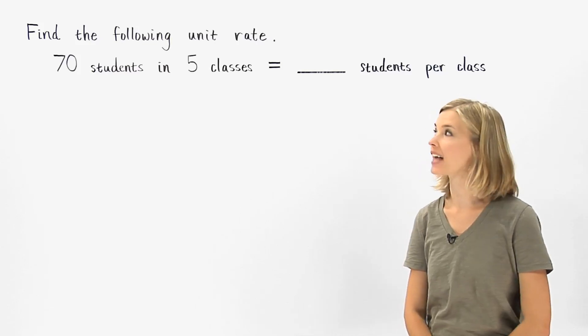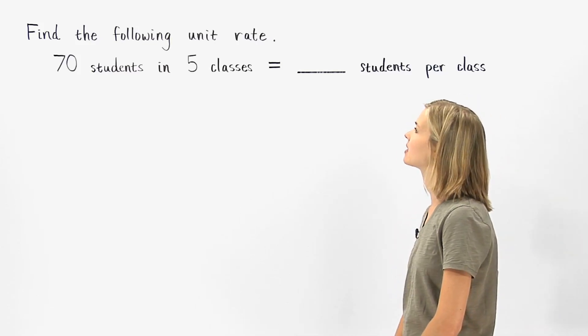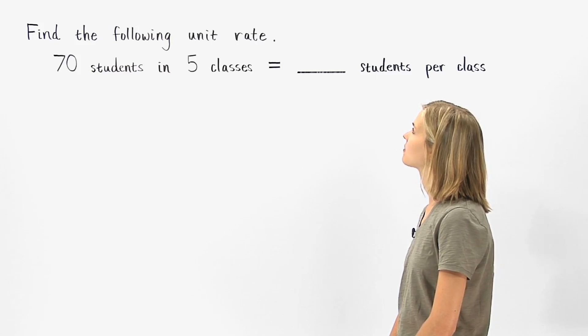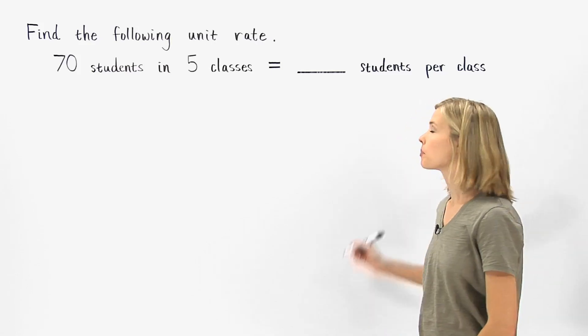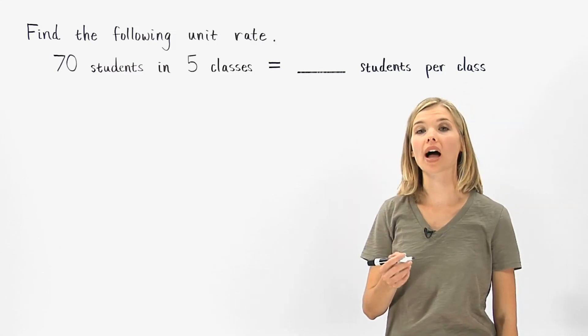In this example, we're asked to find the following unit rate: seventy students in five classes equals blank students per class. Per class means in one class.